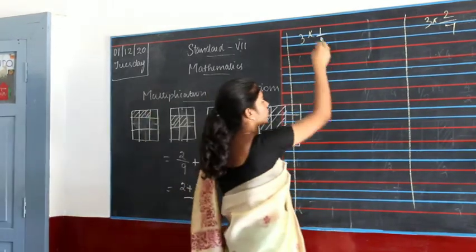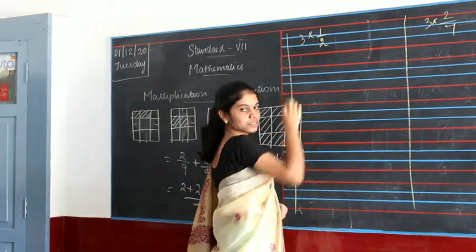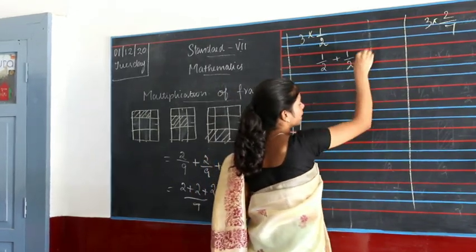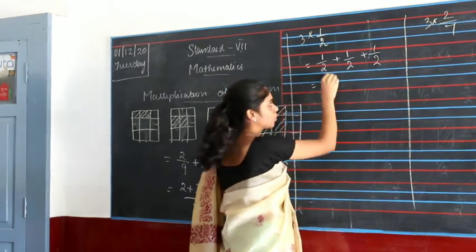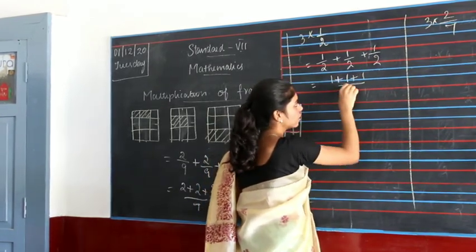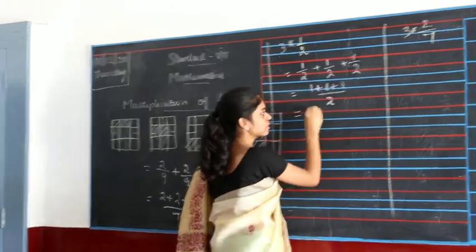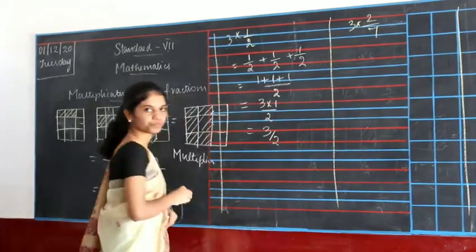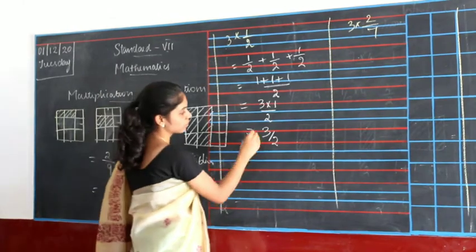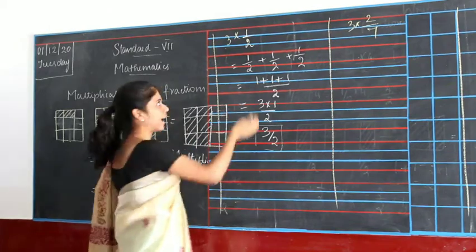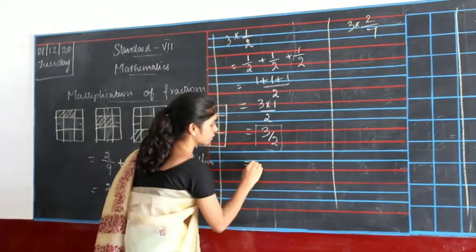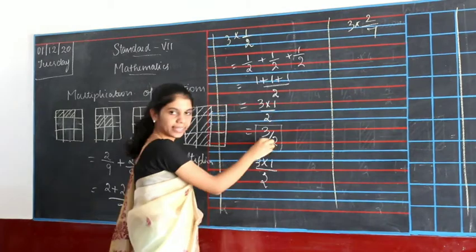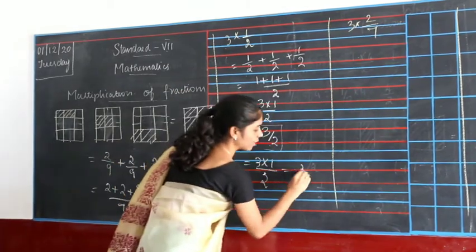Let's see how we are doing here. This means 3 into 1 by 2 means we have 3 one-halves. So 1 by 2 plus 1 by 2 plus 1 by 2. This will give you 1 plus 1 plus 1 divided by 2, which means 3 into 1 divided by 2, giving you 3 by 2. You can multiply directly as 3 into 1 divided by 2, or expand and add. They are one and the same.